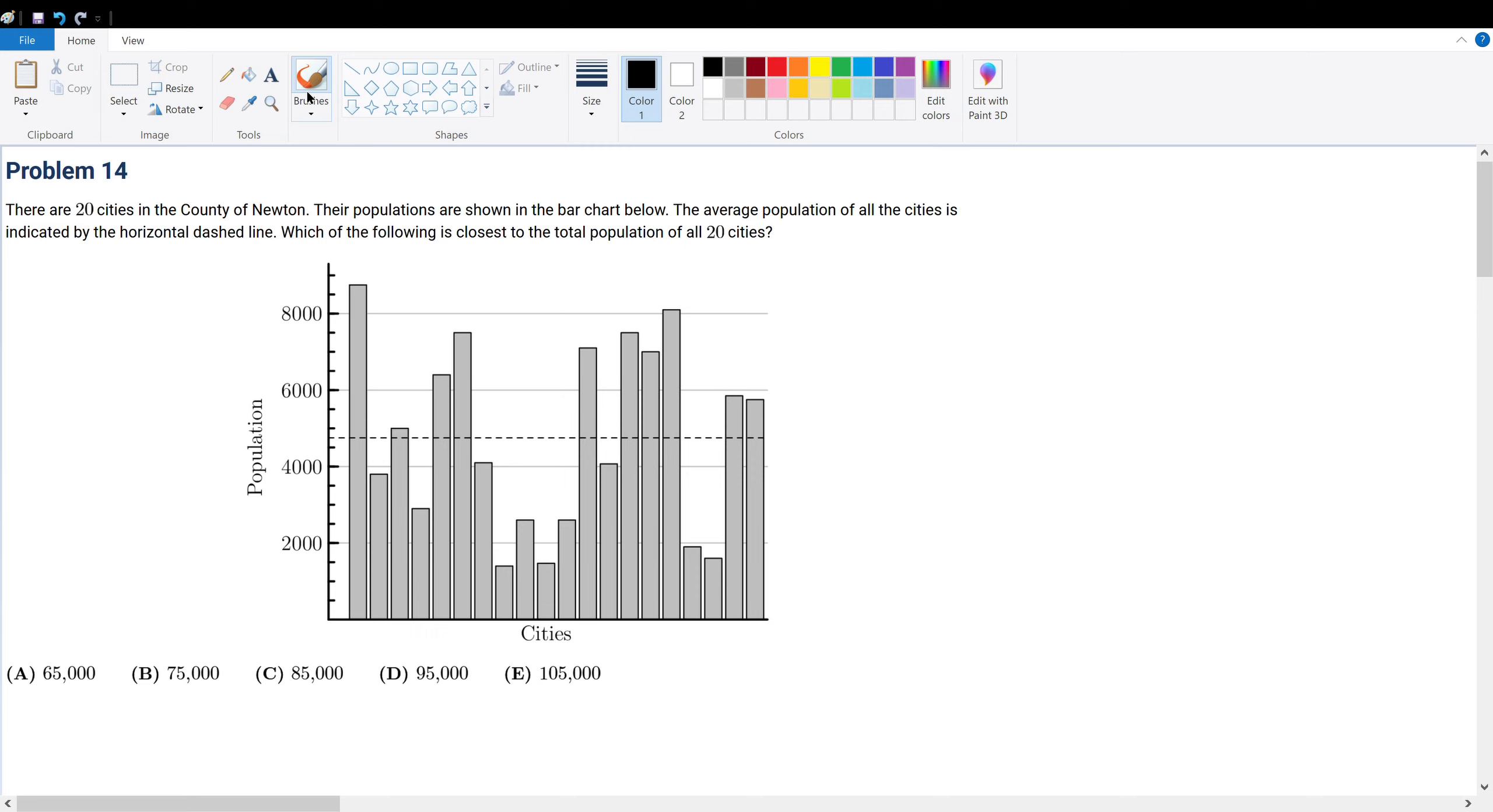Problem 14: There are 20 cities in the County of Newton. Their populations are shown in the bar chart below. The average population of all the cities is indicated by the horizontal dashed line. Which of the following is closest to the total population of all 20 cities? First, we must understand the definition of an average.